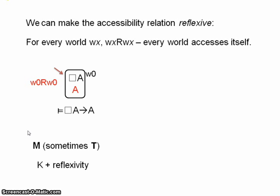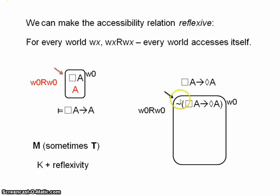So let's check another inference. If necessarily A, then possibly A. This is another one that would seem like a perfectly reasonable inference. So from the false conditional here, we can derive necessarily A and not possibly A. Now in the system K, this is as far as we would be able to go, because if we were working in K, our world wouldn't actually access any other worlds. So there would be nothing we could do. But in M, all worlds access themselves. So we can derive A from necessarily A, and we can derive not A from not possibly A, which of course gives us a contradiction. The tree closes, the formula is valid.